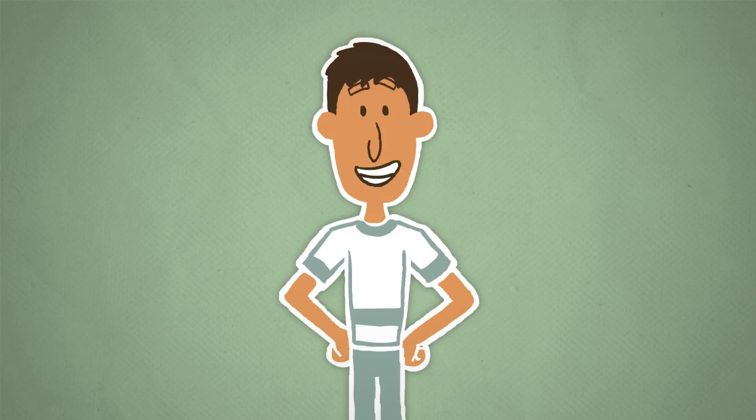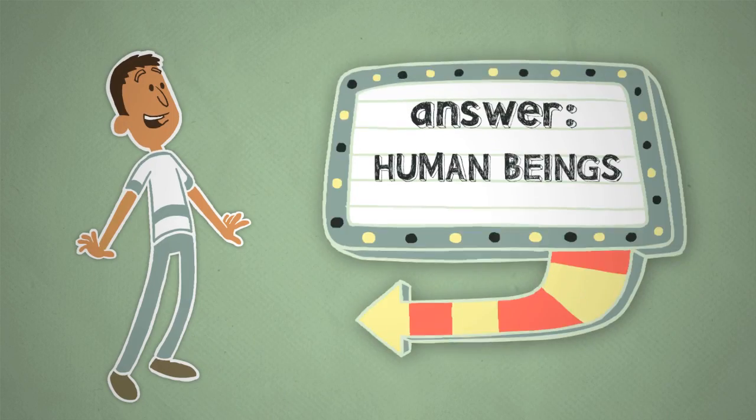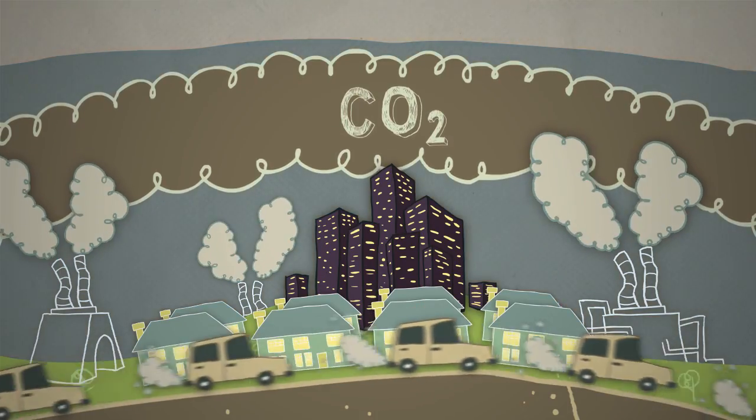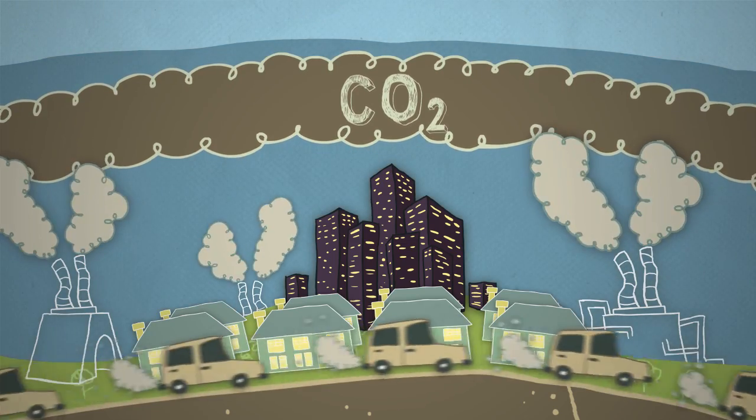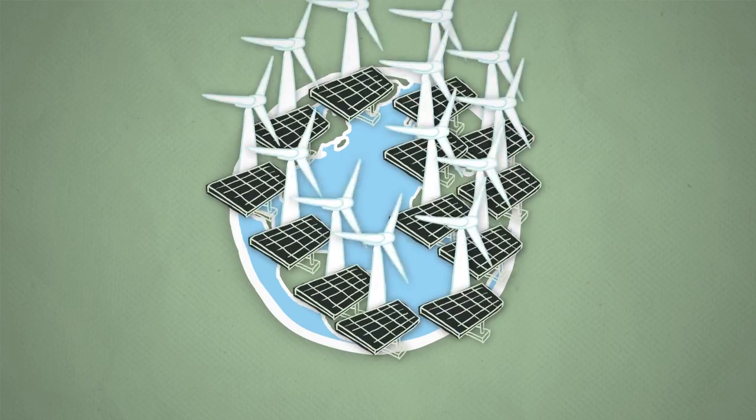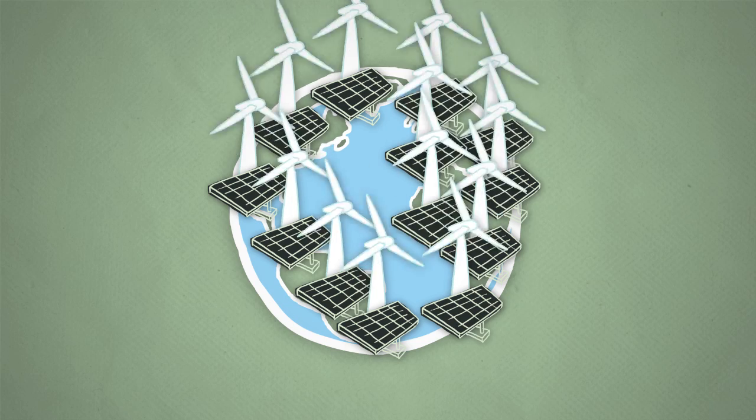As you'll learn, the answer lies in figuring out ways we humans can have a smaller impact on the planet, and lower the amount of carbon dioxide our bustling cities and towns release into the air. By making good choices now, the nations of the world can stop rapid climate change from getting worse.